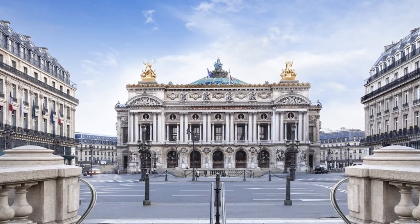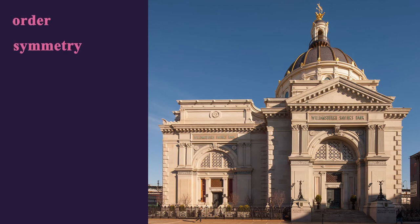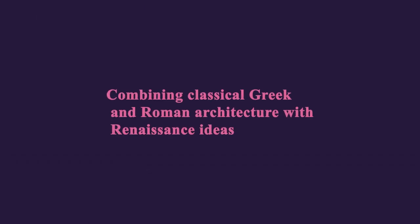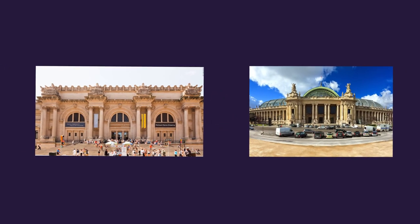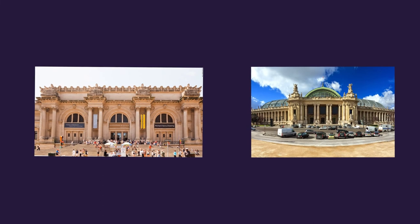Beaux-Arts, from 1895 to 1925, is also known as Beaux-Arts classicism, academic classicism or classical revival. Beaux-Arts architecture is characterized by order, symmetry, formal design, grandiosity and elaborate ornamentation. Combining classical Greek and Roman architecture with Renaissance ideas, Beaux-Arts was a favored style for grand public buildings and opulent mansions. Examples include the Grand Palais in Paris and the Metropolitan Museum of Art in New York City.